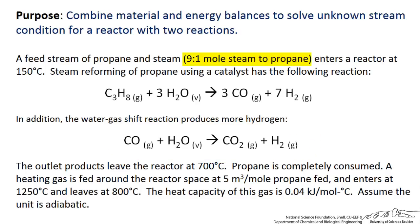We have a feed stream of propane and steam in a 9 to 1 mole ratio that enters the reactor at 150 degrees Celsius. The outlet products leave the reactor at 700 degrees Celsius. Based on this high excess of steam entering with the propane, we can ensure complete consumption of the propane.